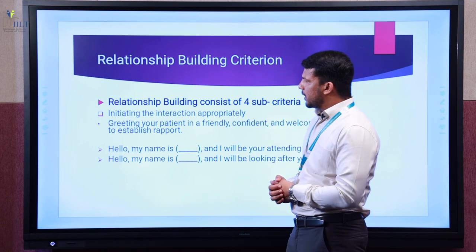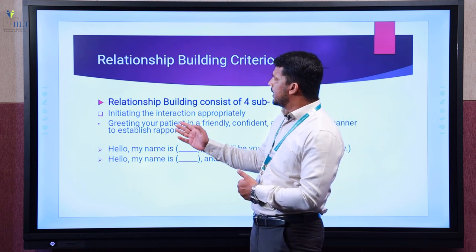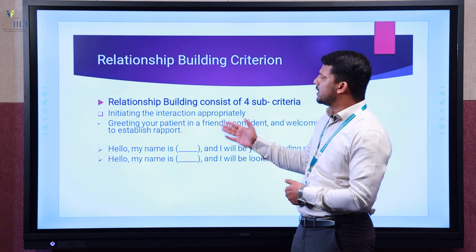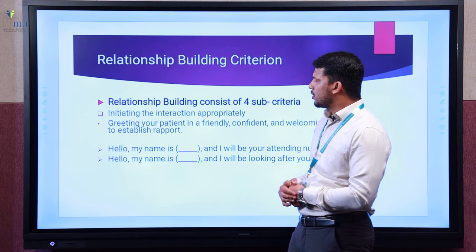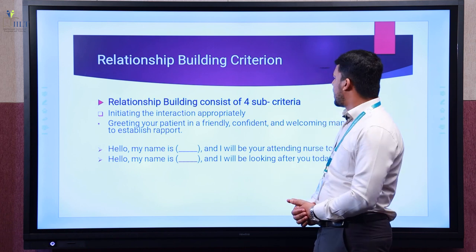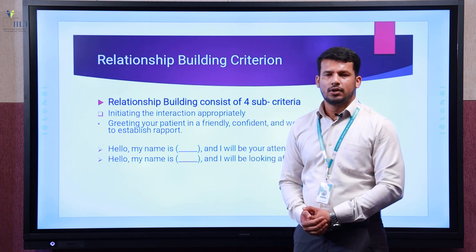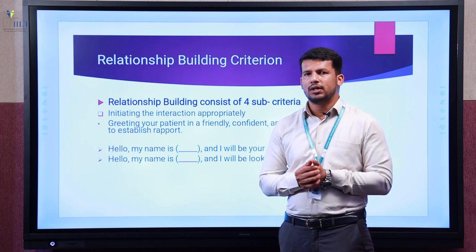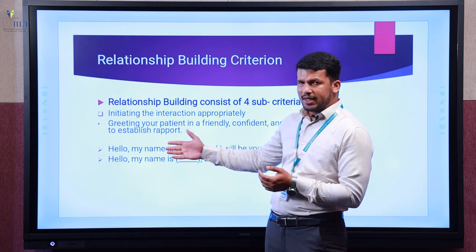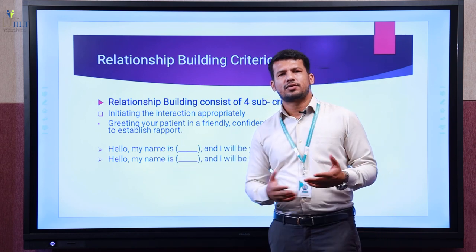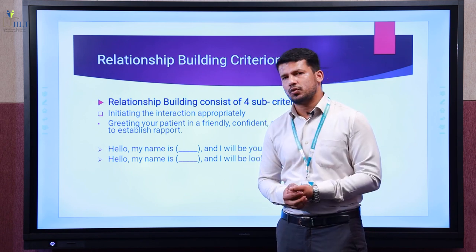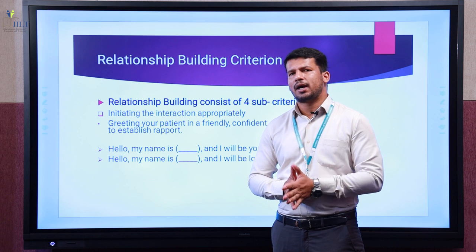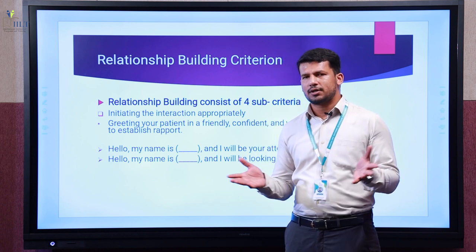The relationship criteria has four sub-criteria. The first is initiating the interaction appropriately — how you initiate the interaction with the patient. It's about greeting your patient in a friendly, confident, and welcoming manner to establish rapport. It's how well you introduce yourself and get the initial information from the patient when you first meet them. An example is: 'Hello, my name is Shibi John. I'm one of the registered nurses working in this facility.'